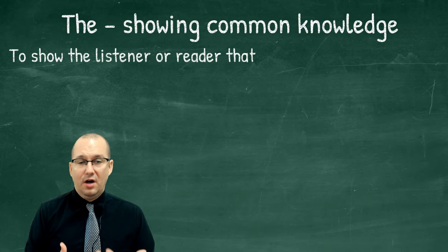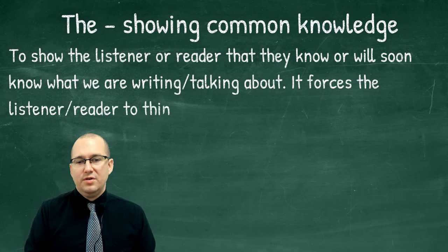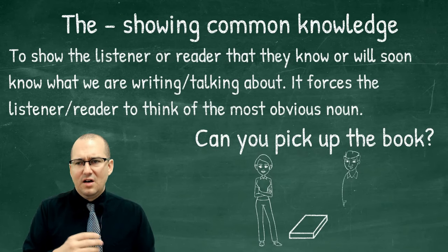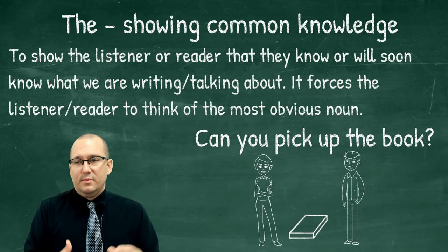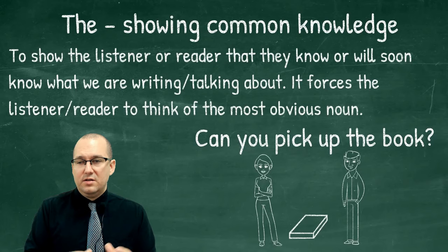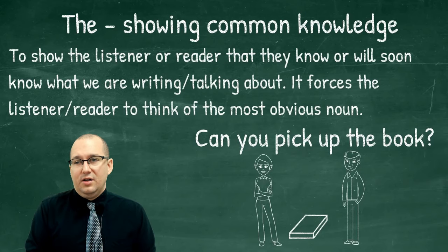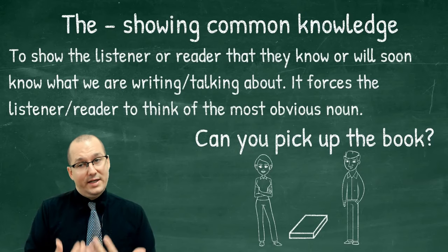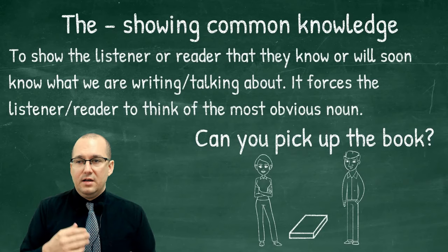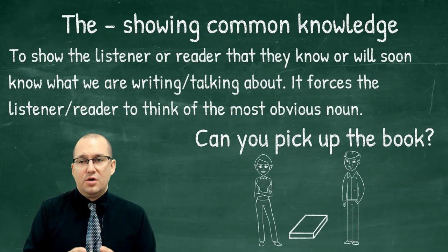Moving on to showing common knowledge. We use 'the' to show the listener or reader that they know — or will soon know — what we are writing or talking about. It forces the listener to think of the most obvious noun. For example: 'Can you pick up the book?' Your first reaction would be to look for the nearest book right in front of you. Or: 'Look out the window' — if there's one window in the room, we'd say 'the window' because we both know which one. The writer or speaker uses 'the' to show something that should be obvious.